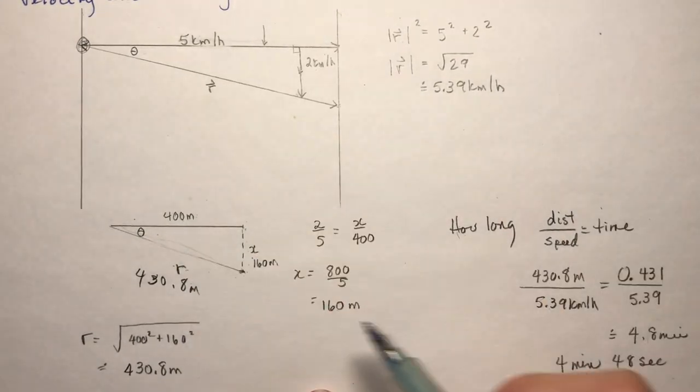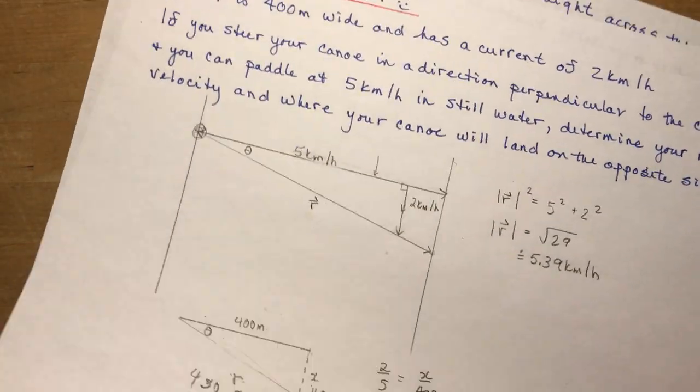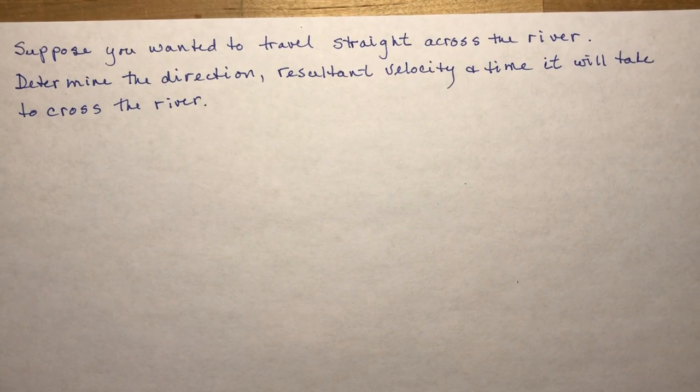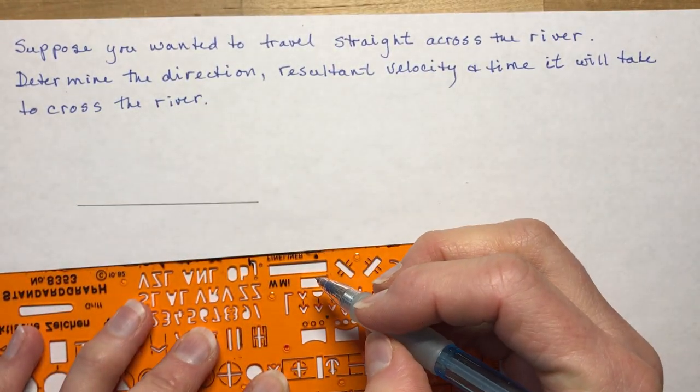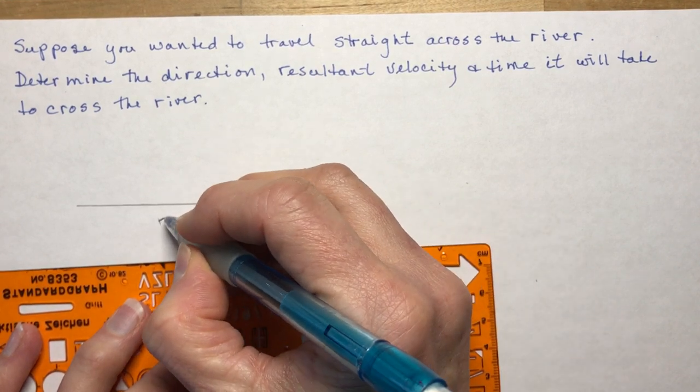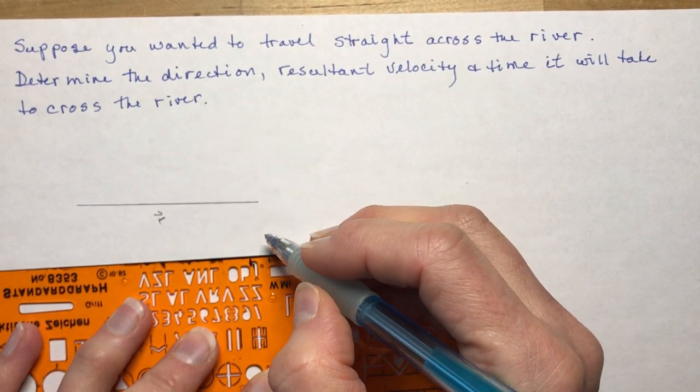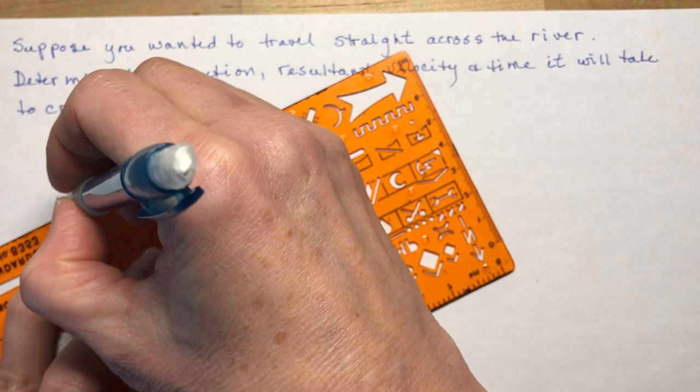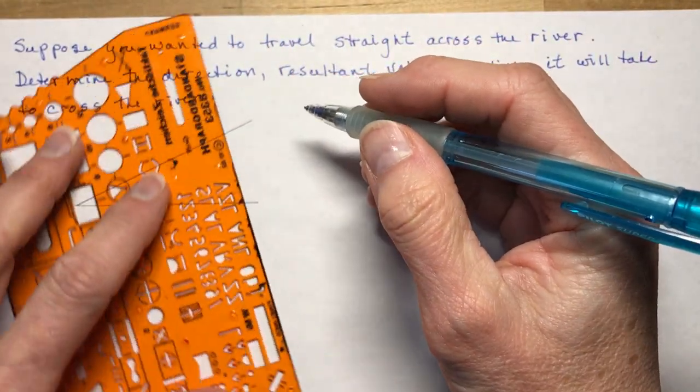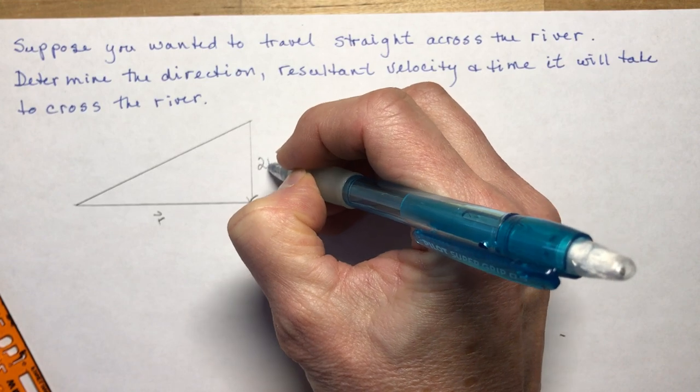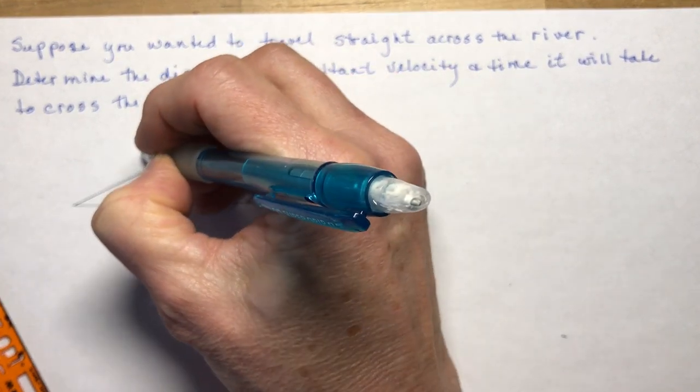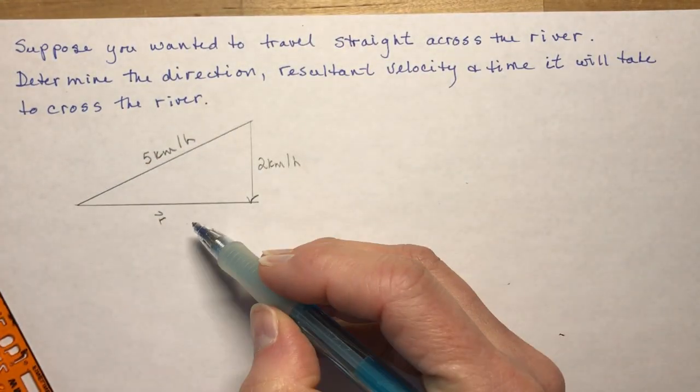So that's how you would do this question. Now let's do the second part that was asked, which said, suppose you want to travel straight across the river. Determine the resultant velocity and time it will take to cross the river. Okay, so we have the same situation. I'm trying to go straight across the river, but this is my resultant. I want this to be the resultant. I want to go here. But I'm going this way. I have to go up on an angle like this to go down this way. So I have a 2 kilometer an hour current. My speed is 5 kilometers per hour in still water. What's my resultant velocity?